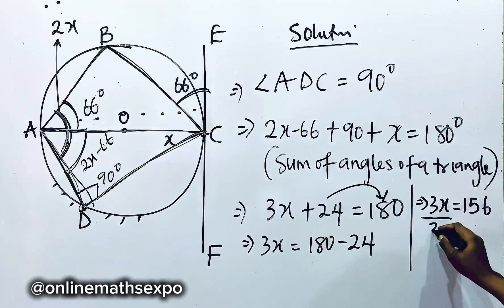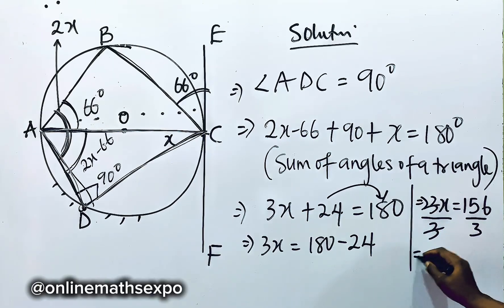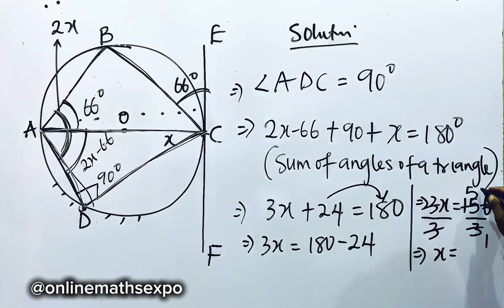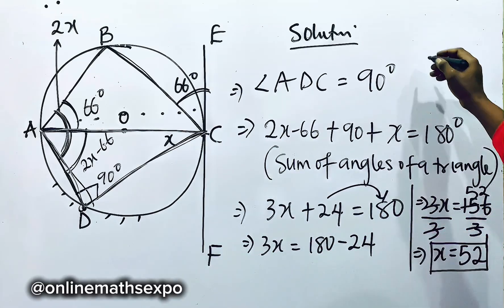To get X, divide both sides by 3. And when you do that, X will give us, if you divide this, 3 here is 1, 3 is 5, and 3 is 2. So we have 52. So it means that the value of X, we can take it up.